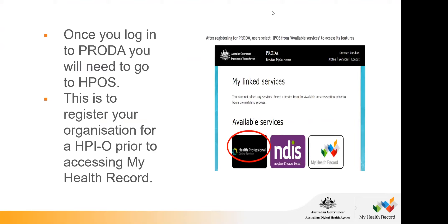Once PRODA is set up, you log in via the usual two-step process — you'll receive a code sent to your telephone or email. The home screen will look something like what's shown. Even though it may say My Health Record, before you can access it, we need to get you registered and ensure your individual HPII is linked to an organisation HPIO. Even if you work for yourself as a sole trader, you still need to register yourself as an organisation and link your individual number to your organisation number, even though both may be in your name.